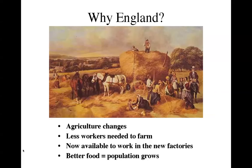Enclosures are where you basically build a fence around your property. This is important when you're talking about raising livestock, whether it's cows, sheep, or pigs. When you have a fence around, obviously they're not going to run away, so you can raise many more animals and in turn sell them. Because of these advancements, fewer workers are needed to work the farm. If fewer people are needed on the farm, they're available to go somewhere else — now they have to go to the cities to find work in the factories. In addition, these advancements in agriculture allowed farmers to produce better food. When better food is produced, people are healthier, they live longer, and the population grows.